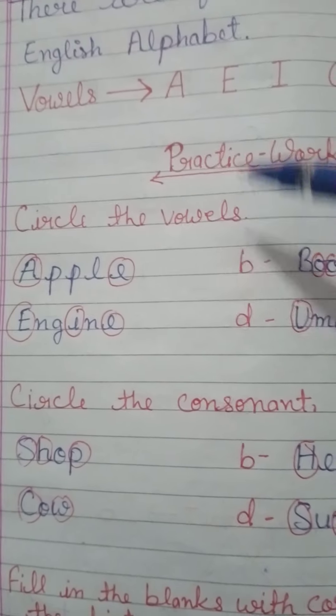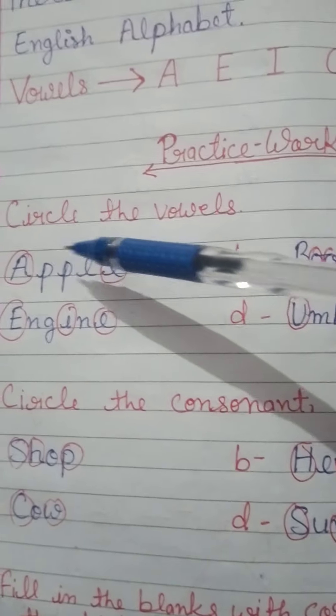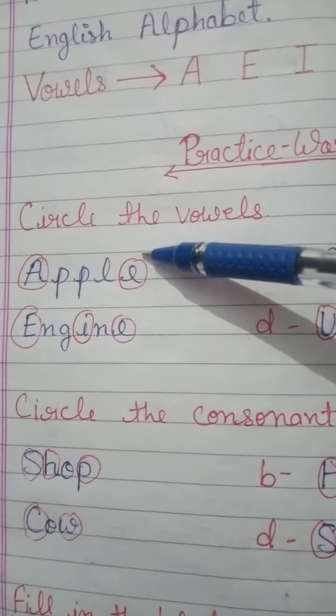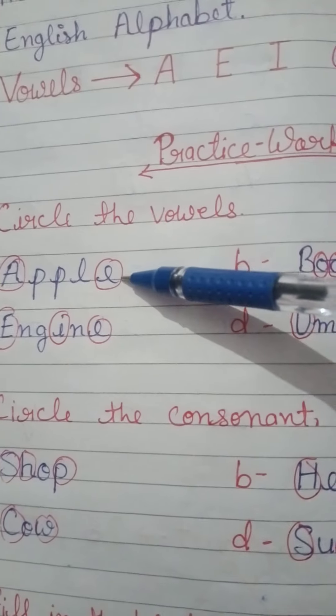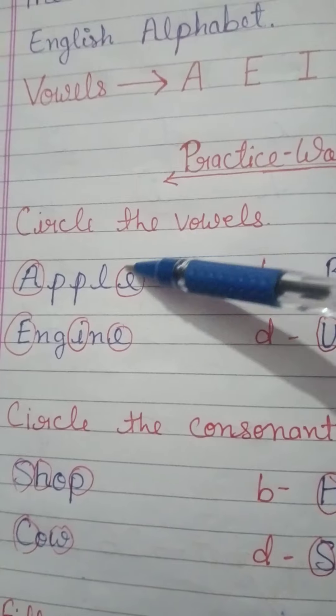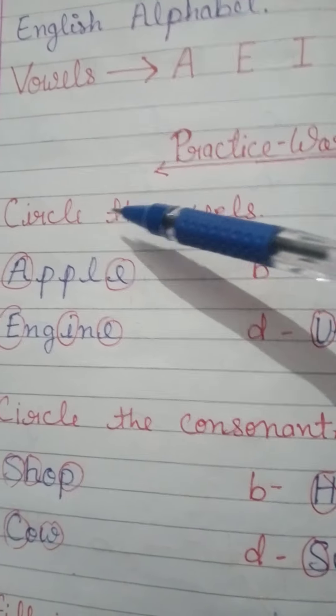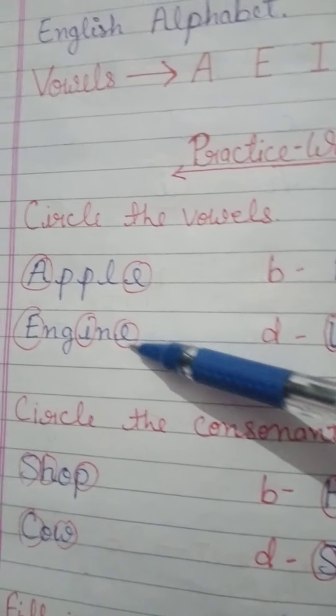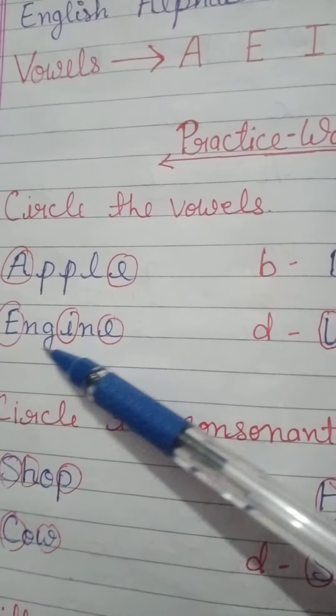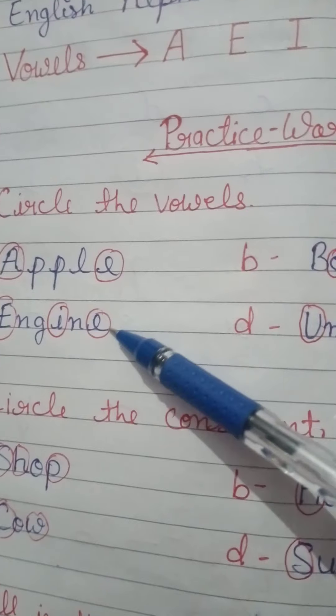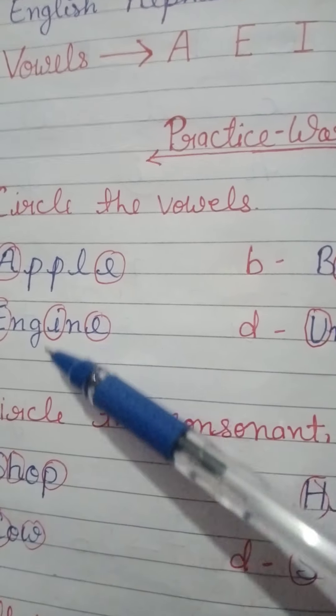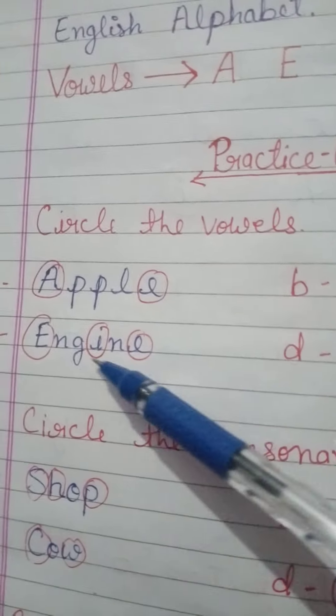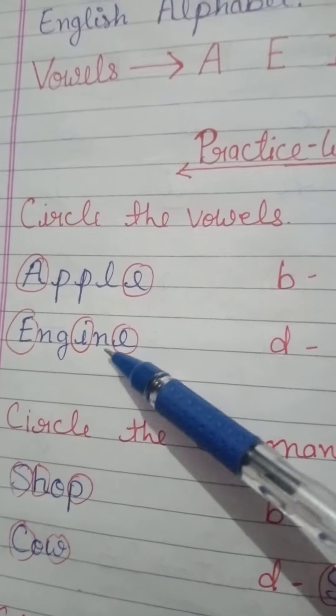The exercise is circle the vowels. Here the name of fruits is written. Apple, and in apple we have A and E vowel, which I have circled. Because the question says circle the vowels. Here we have engine. In this, E, I, and E are vowels, which I have circled. The rest are consonants.